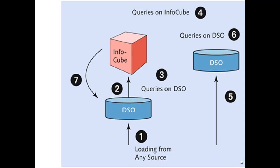In the data flow for DSOs, when loading from any source, the DSO is used as a staging layer — data reaches the DSO first at the detail level. If you have a target on top of your DSO, it will send the data to that target. If you don't have any data targets on top of your DSO, you can create queries directly on your DSO, making the DSO itself a data target.